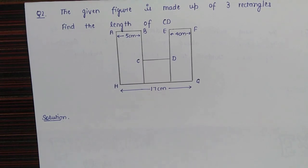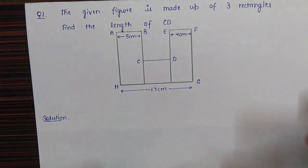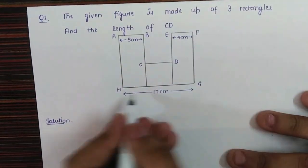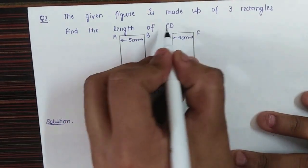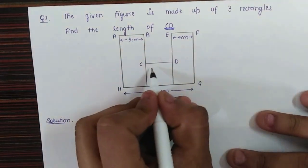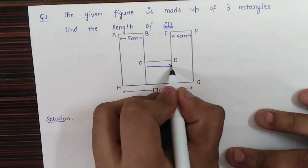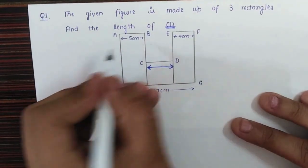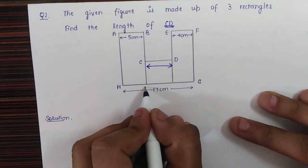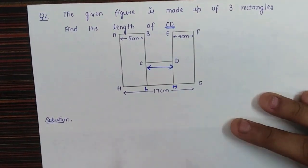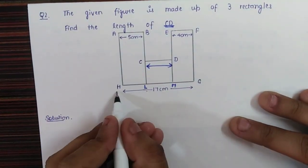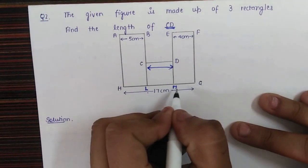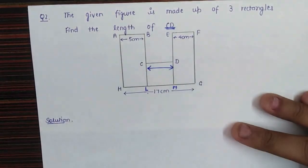Let's take a look at the second question. We are given a figure and we have to find the length of CD. This figure is actually made up of three rectangles. Let's name them: ABLH is one rectangle, LMCD is another rectangle, and MGFE is the third rectangle.